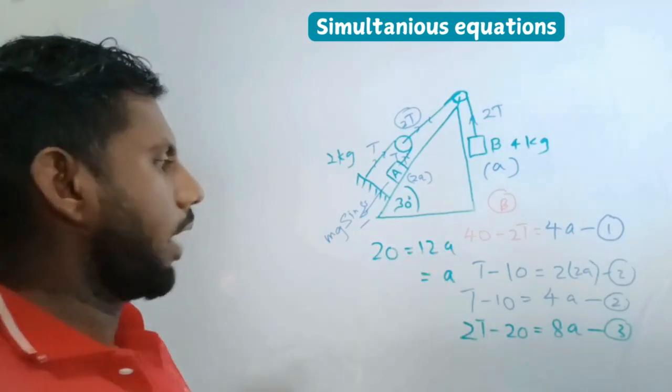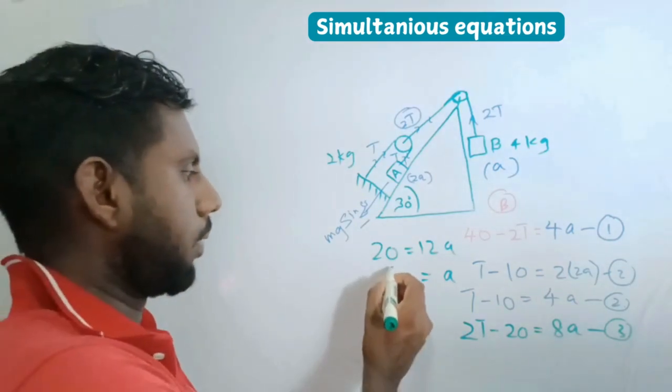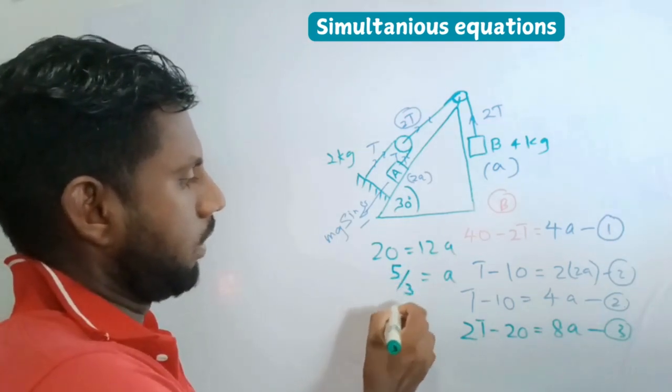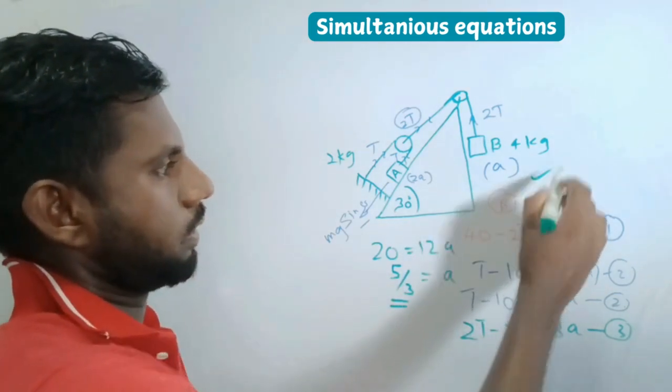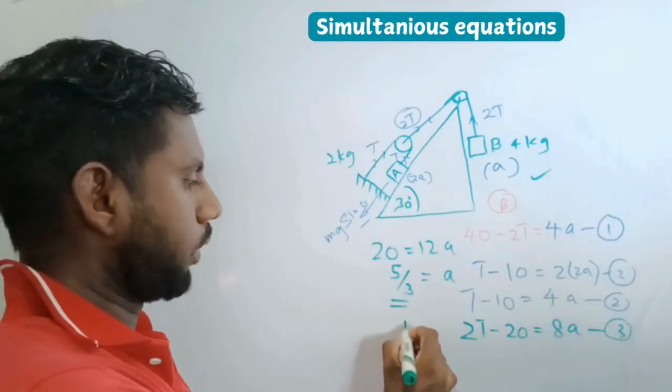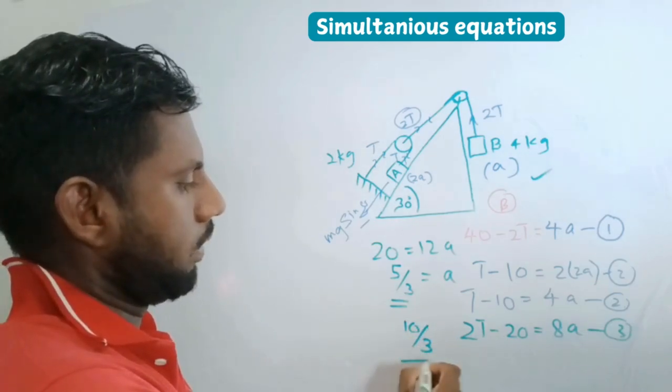So a becomes 20 divided by 12, which simplifies to 5/3. This is the acceleration of B. The acceleration of A is multiplied by 2, so it's 10/3. That is the answer.